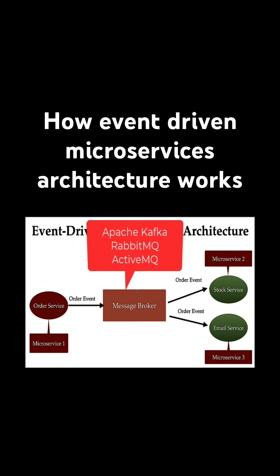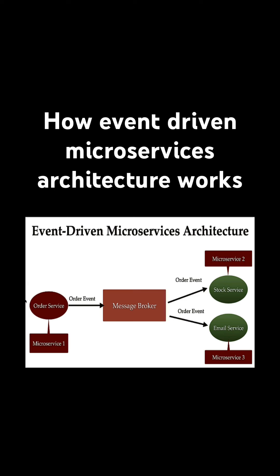A message broker can be RabbitMQ, Apache Kafka, or Apache ActiveMQ — you can use any message broker you want for asynchronous communication between multiple microservices. So whenever a customer places an order, the order service will create an order event and publish that order event to the message broker.